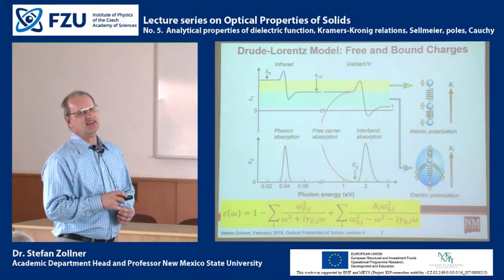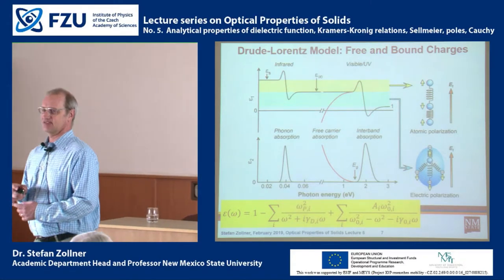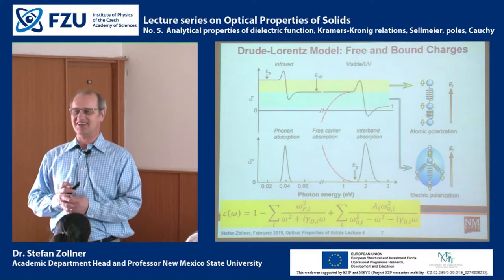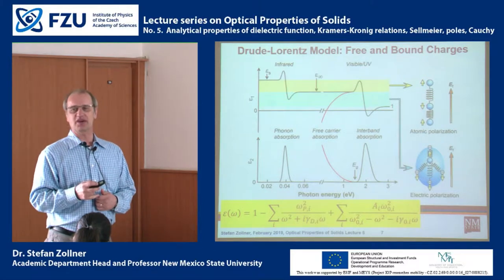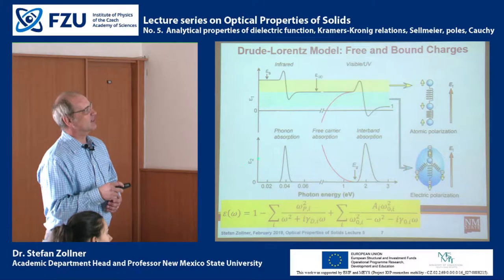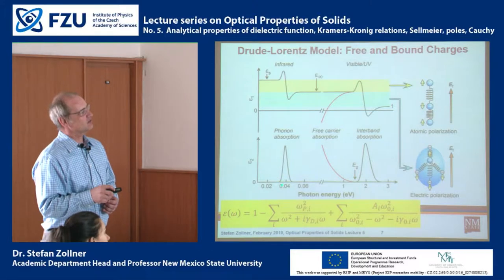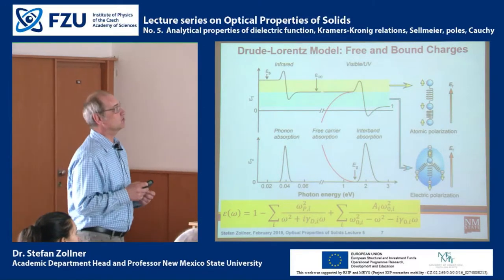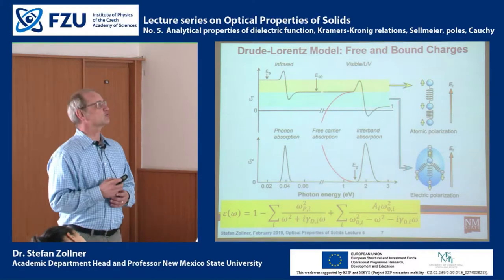When you look at papers, in many cases instead of epsilon-1 and epsilon-2 you will see N and K. What figures you put in a paper probably depends on your audience. From a physics or chemistry perspective, epsilon-2 tells us what absorbs, which I find more convenient. Epsilon-2 has a nice Lorentzian or Gaussian shape, whereas if you plot K you get an asymmetric line shape. So epsilon-2 is probably easier to understand.